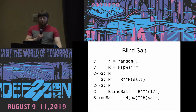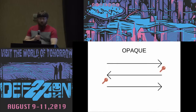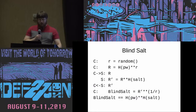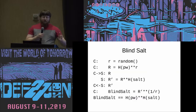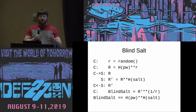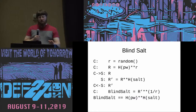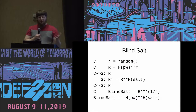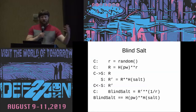So basically, blind salt prevents precomputation attacks. It was first introduced with OPAQUE. Basically, after running through the protocol, if you had the wrong password, you have the wrong salt when you run your password KDF. And there's no information leakage in the algorithm — you can't guess what the password was from the server side. This makes it so that you have to do online password guessing.